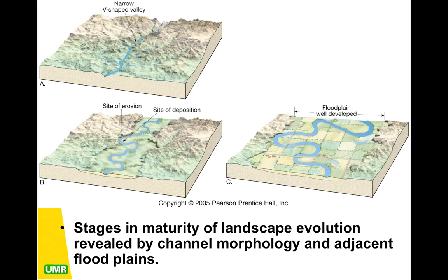The river is working down towards the water table. As it's cutting into the valley and cutting down into the land, it begins to meander — moving back and forth. As it meanders, it's no longer just eroding all of the time; it is both eroding and depositing. In a meander, erosion happens on the outside of the bank where the water is flowing fastest, while on the inside we see deposition.